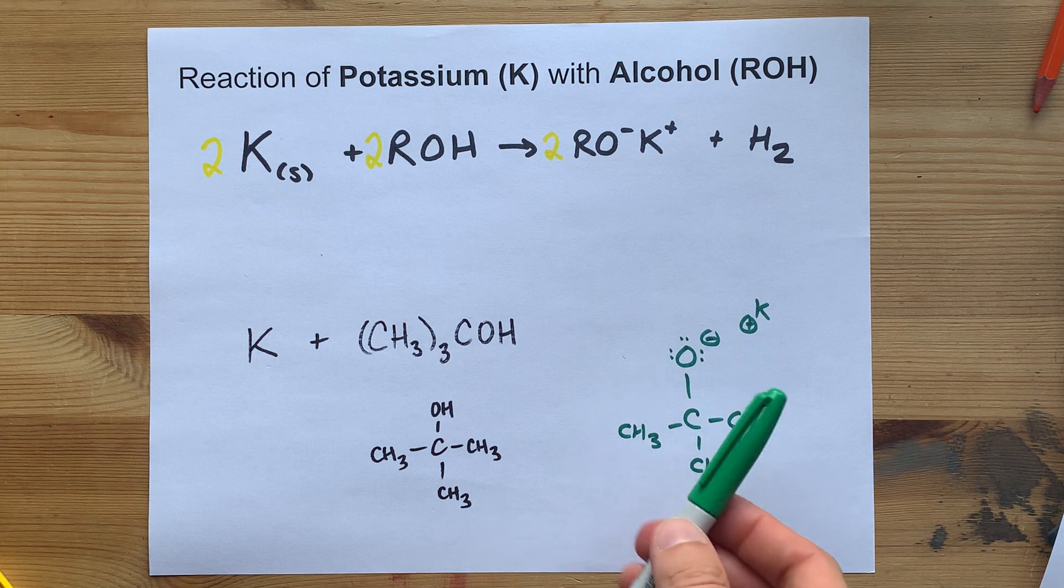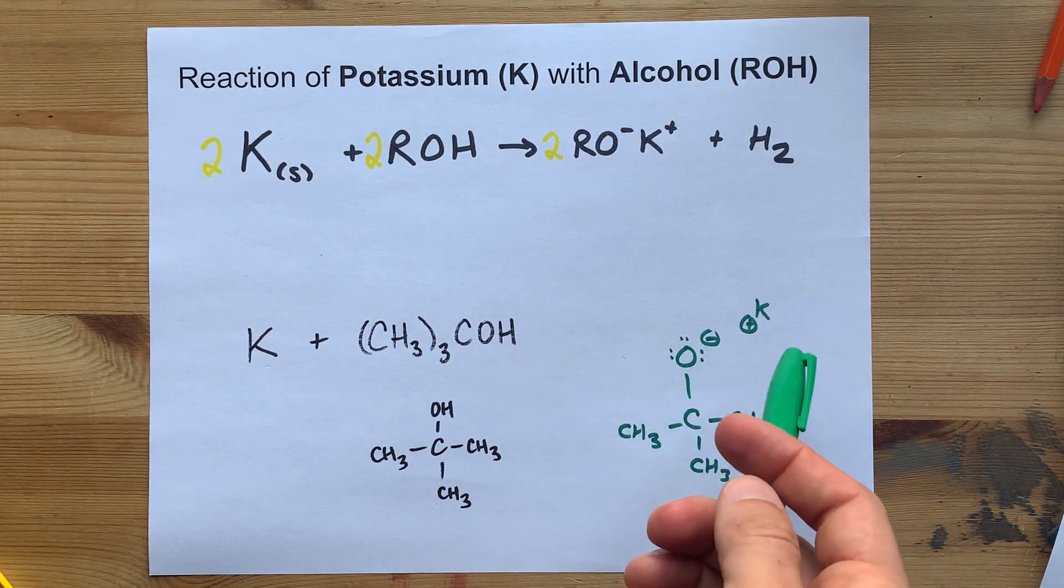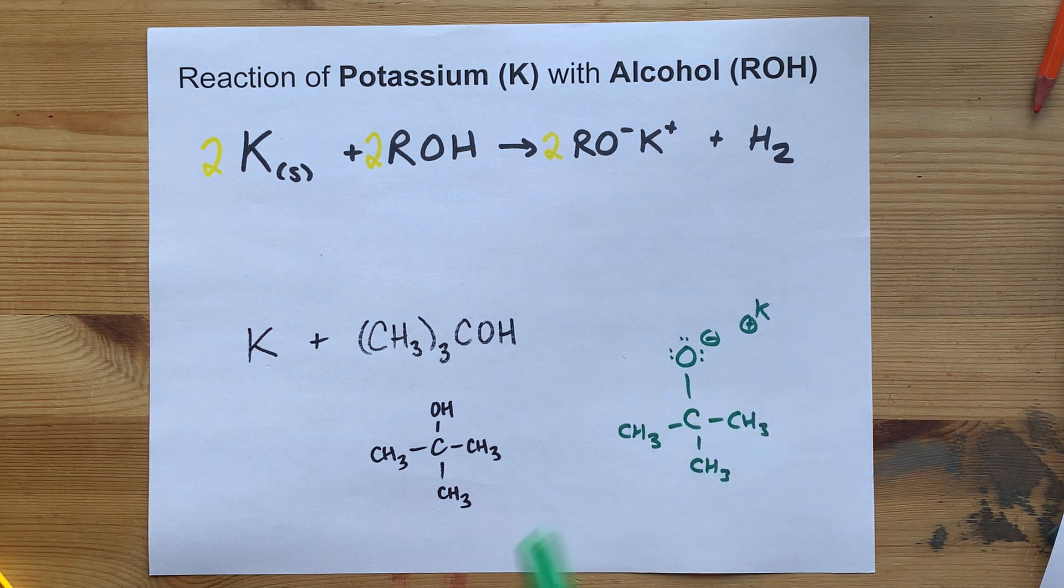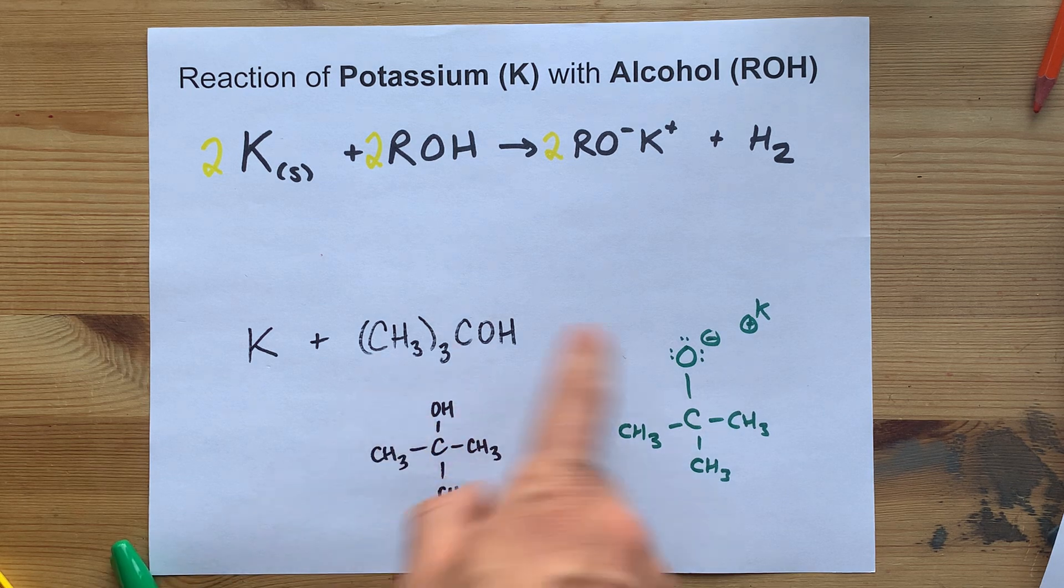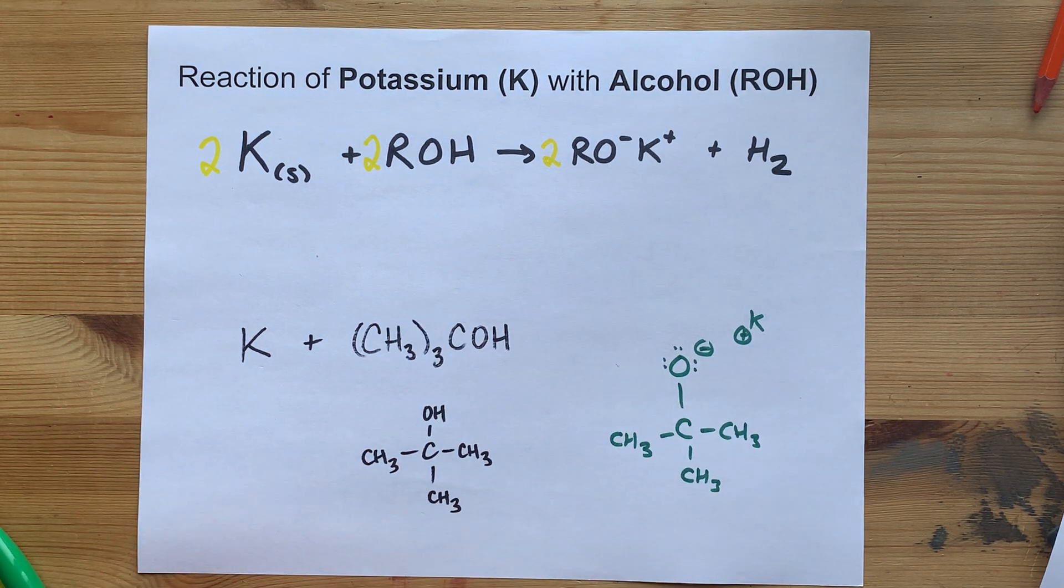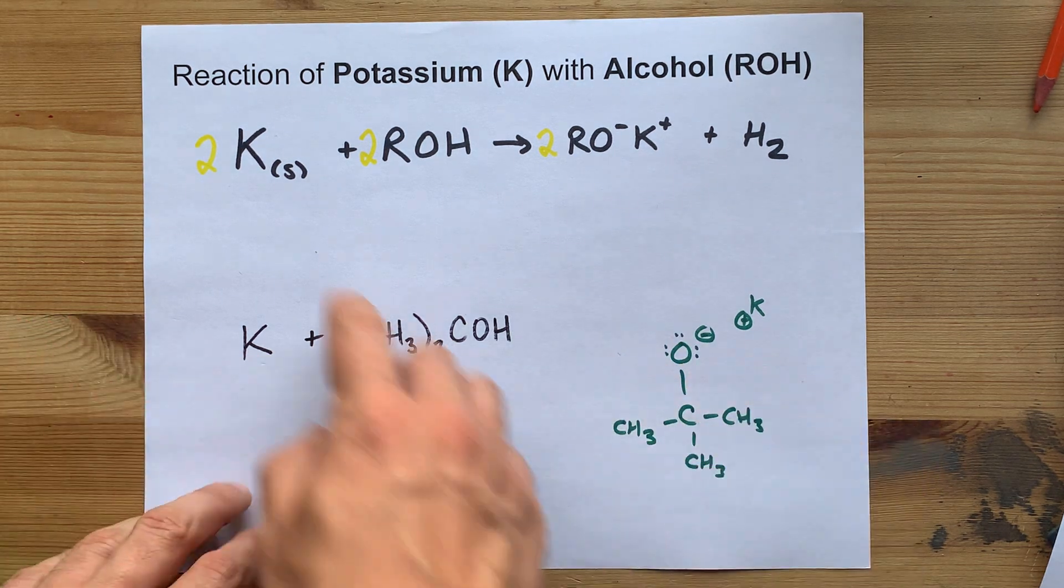If you have any amount of H that's connected to something somewhat weakly, like a weak acid, this will take that H aggressively. This is called potassium t-butoxide, and if you ever go into organic chemistry, you will see it.